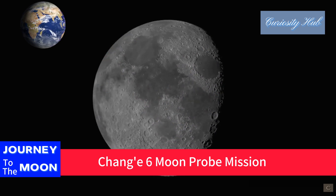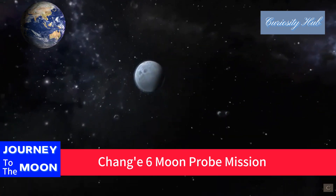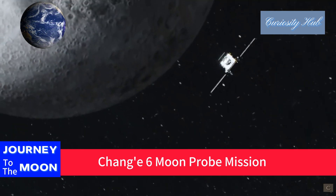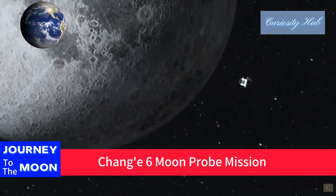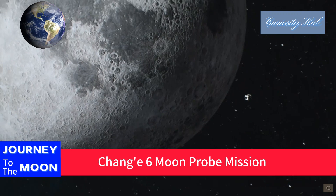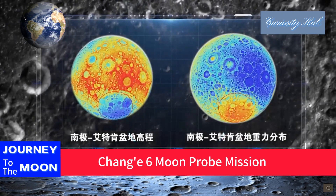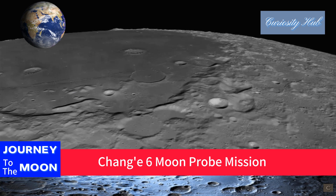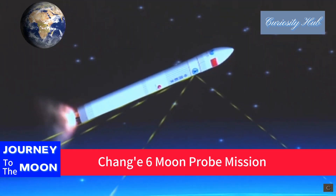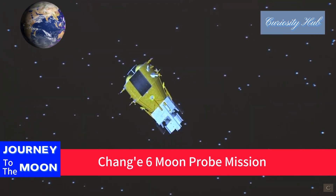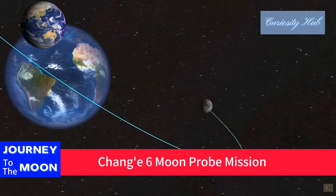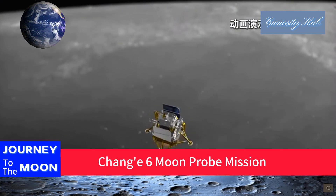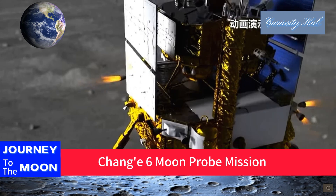The Chang'e 6 mission is a lunar exploration mission conducted by the China National Space Administration (CNSA). The mission aims to reach the South Pole-Aitken Basin on the far side of the moon and collect samples from the lunar surface. The entire process, from rocket launch to the return of lunar samples to Earth, spans 53 days. This marks the world's first mission to collect and return samples from the lunar far side.